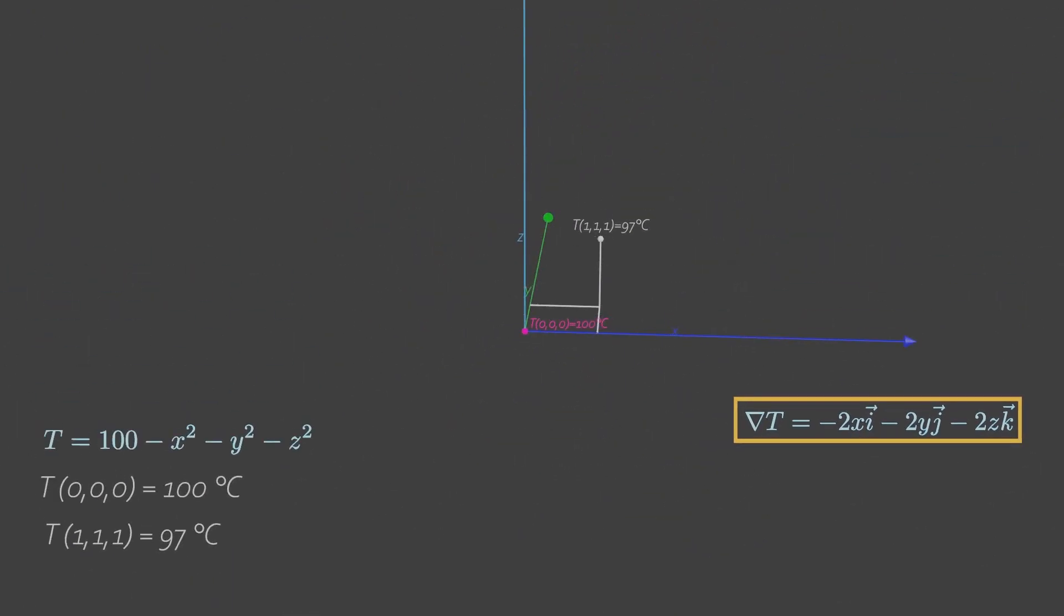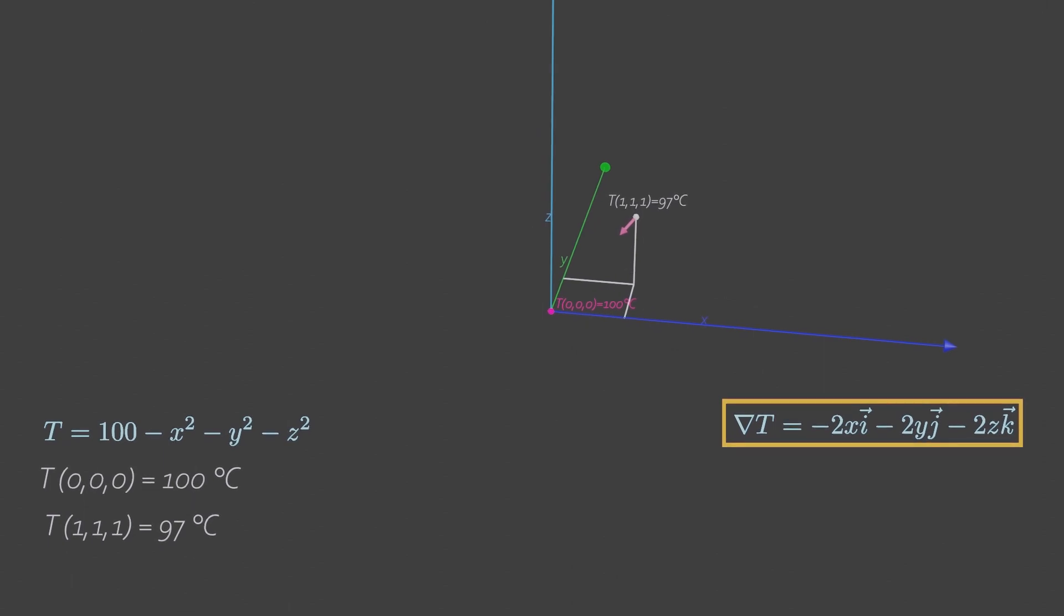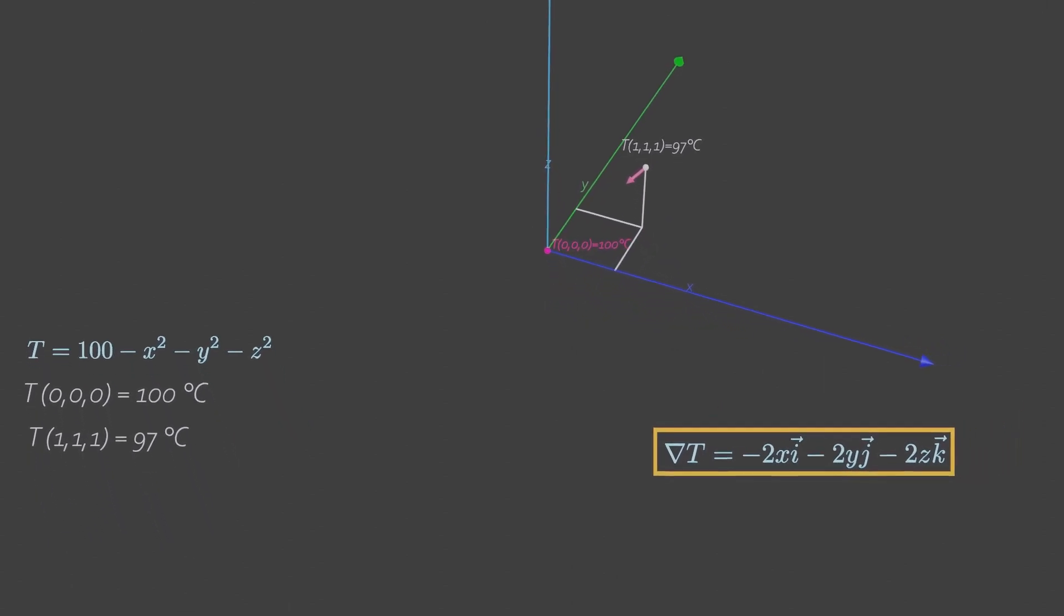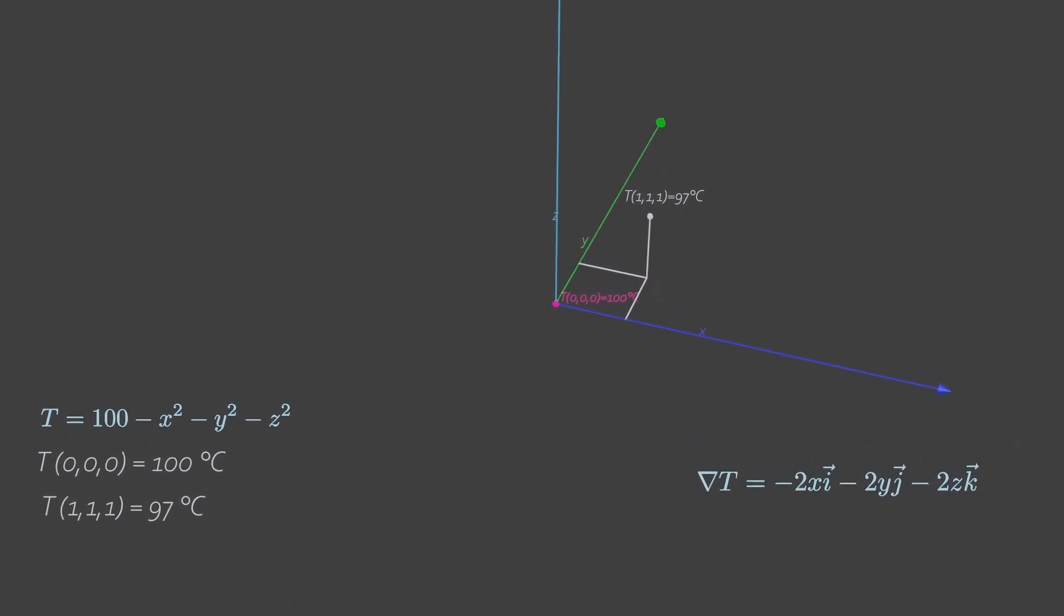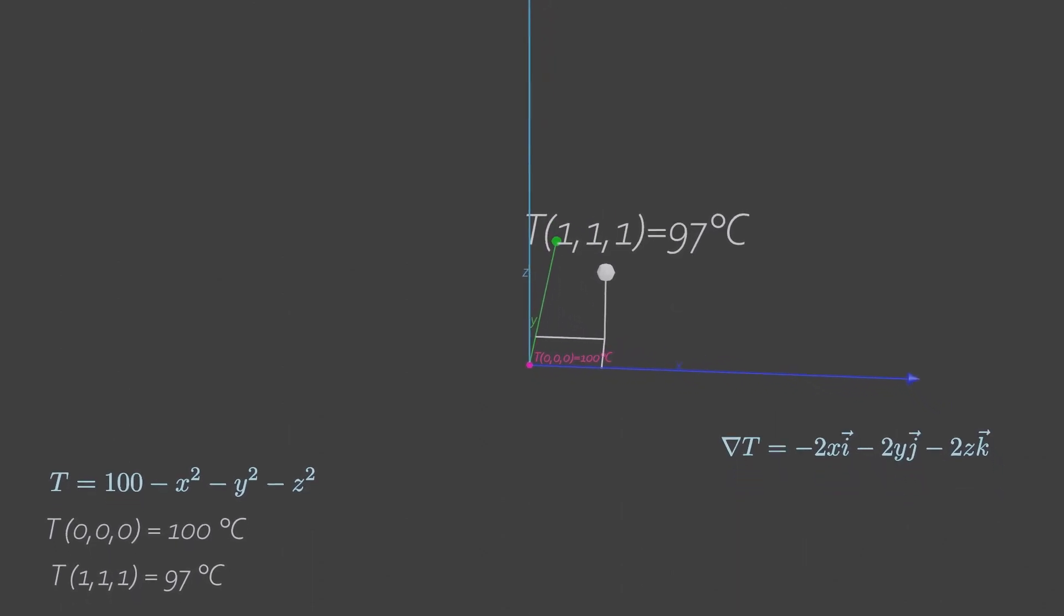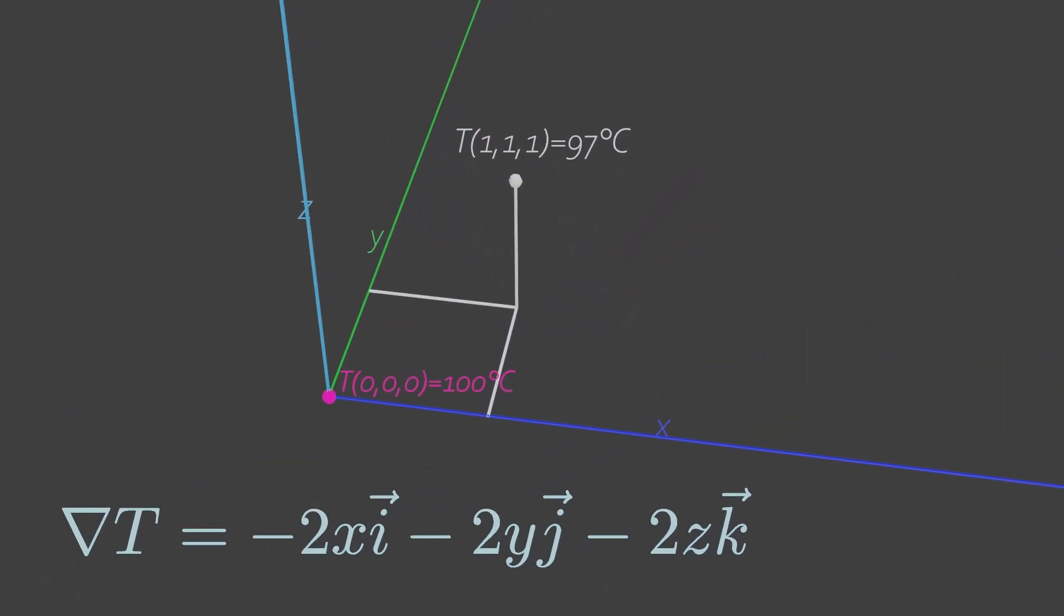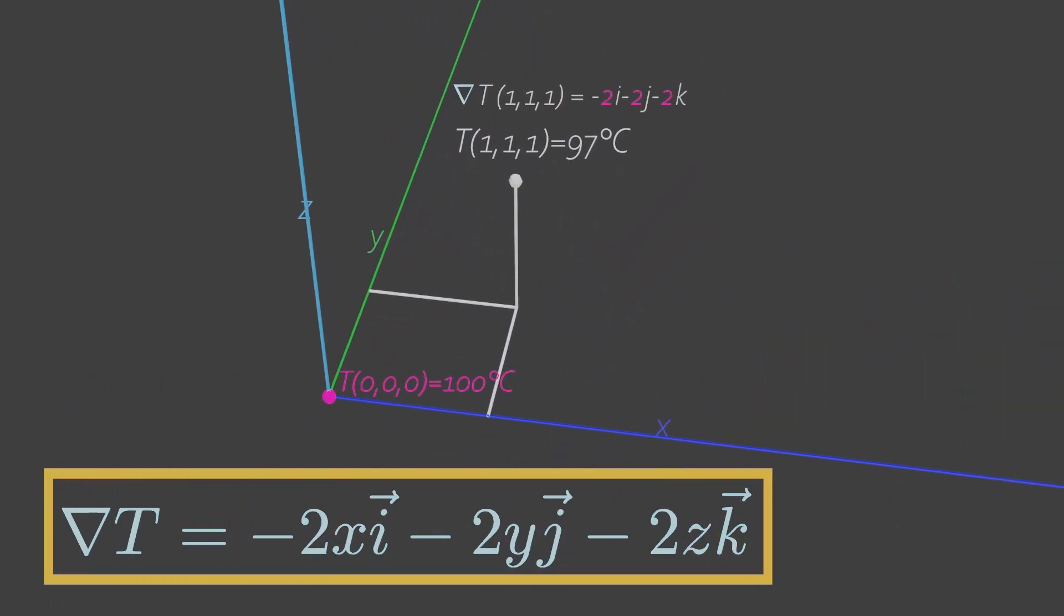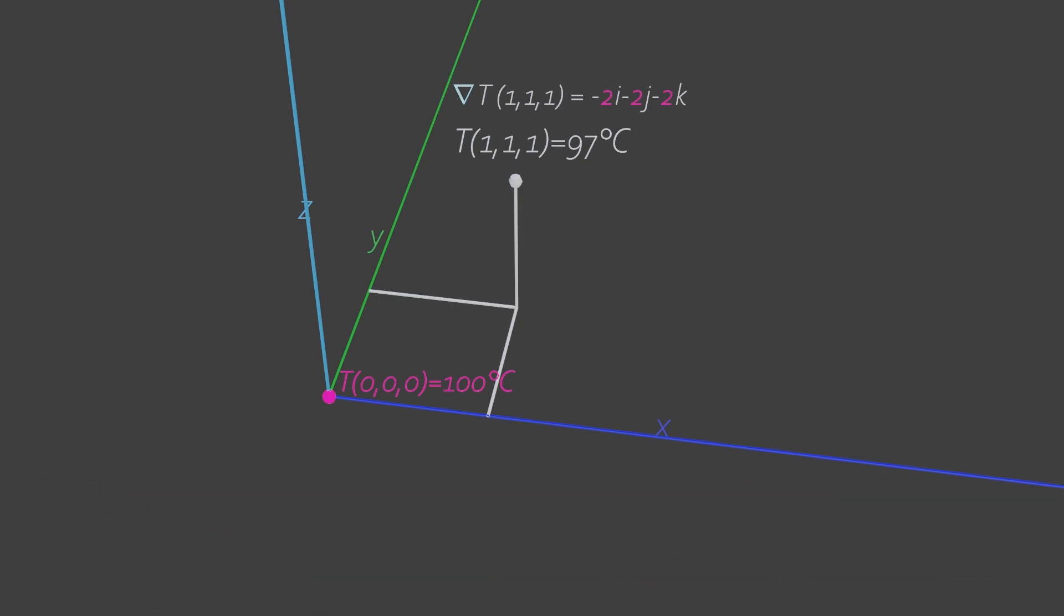The gradient of this temperature field gives the vector direction towards the origin, no matter where in space you are. For example, the temperature at this coordinate is 97 degrees which is a scalar quantity, whereas the gradient at that same point is a vector.